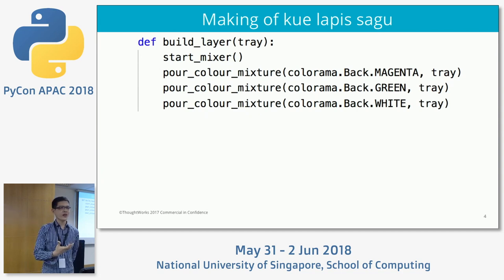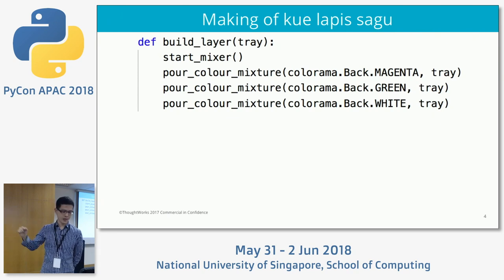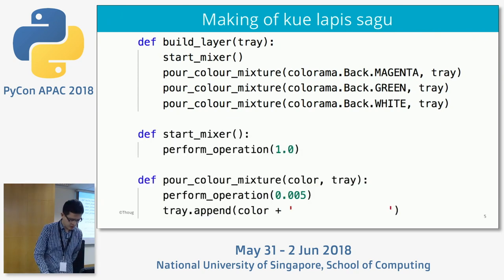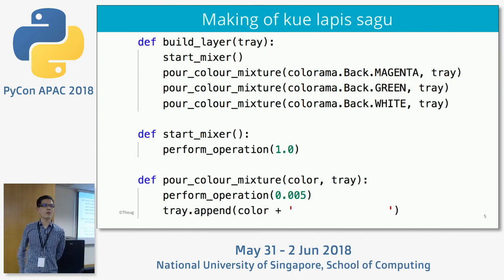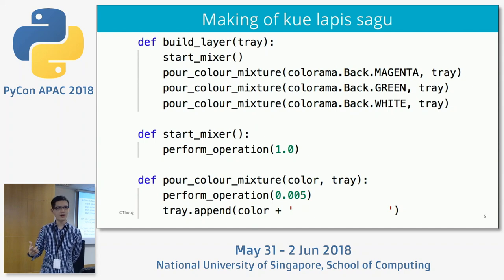The build_layer function receives a tray, starts the mix operation, and once the mixing is complete you start pouring the colors one by one: magenta, green, and white. If we dig deeper into the code, if you look at start_mixer and pour_color_mixture, I implemented a perform_operation method there. There's nothing special in that — it's just a loop with a big number and some random calculations just to keep the processor busy when it's running.